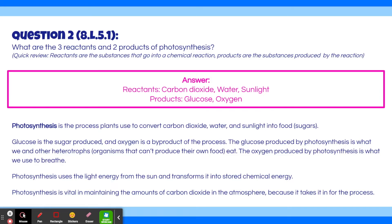Photosynthesis is the process plants use to convert carbon dioxide, water, and sunlight into food. This food is both for the plants themselves and also other organisms, like us, that can't produce food on our own. Glucose is the sugar produced and oxygen is a byproduct of the process. A byproduct is something made by the process that isn't the actual purpose of the process — the purpose of photosynthesis is to produce food, aka glucose. Oxygen isn't food, but it is produced in the process anyway, which is good because we need it to breathe. The glucose produced by photosynthesis is what we and other heterotrophs eat. Photosynthesis uses the light energy from the sun and transforms it into stored chemical energy. It is also vital in maintaining the amounts of carbon dioxide in the atmosphere, because it takes it in for the process. This is why things like deforestation, where you cut down many plants, are bad for the atmosphere.